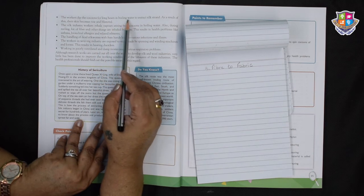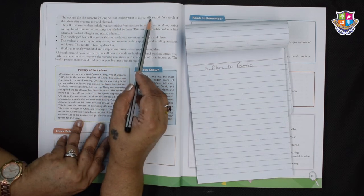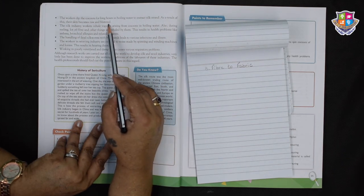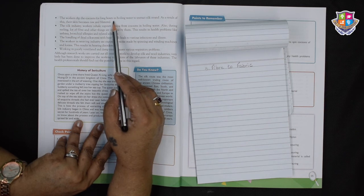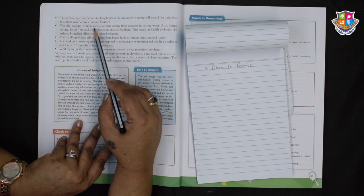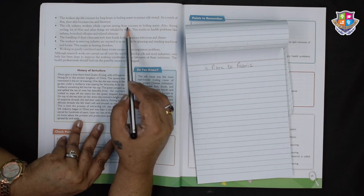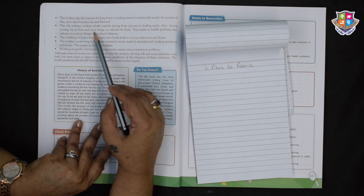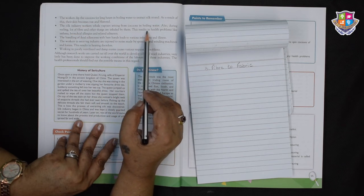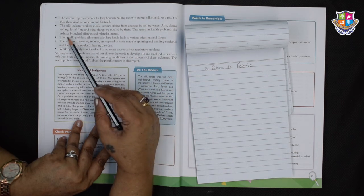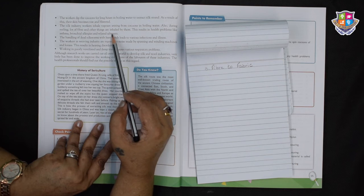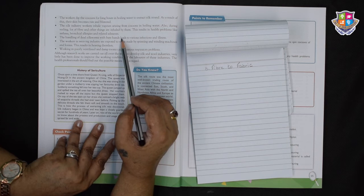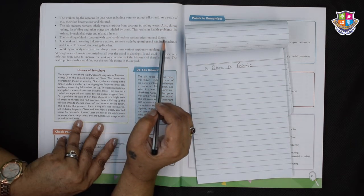The workers dip the cocoons for long hours in boiling water to extract silk strand. As a result of this, their skin becomes raw and blistered. This must be certainly painful, isn't it? The silk industry workers inhale vapours arising from cocoons in boiling water. Also during reeling, a lot of fiber and other things are inhaled by them. This results in health problems like asthma, bronchial allergies and related ailments.